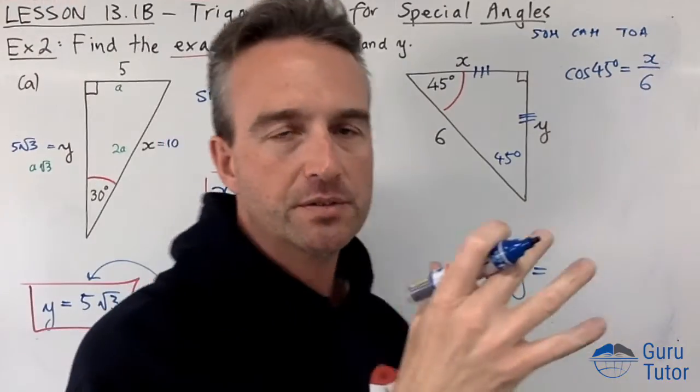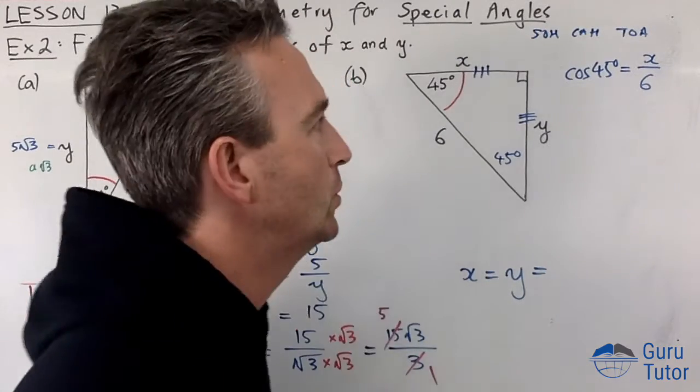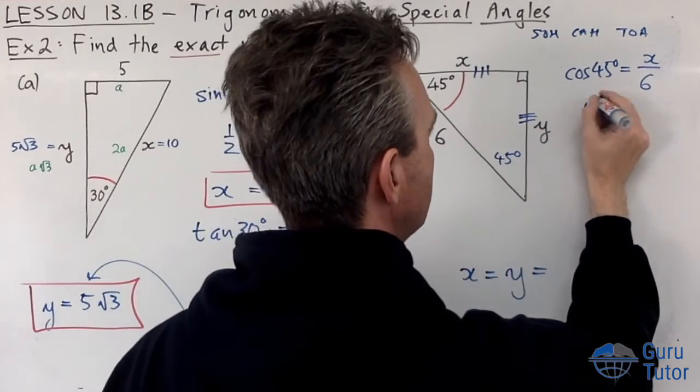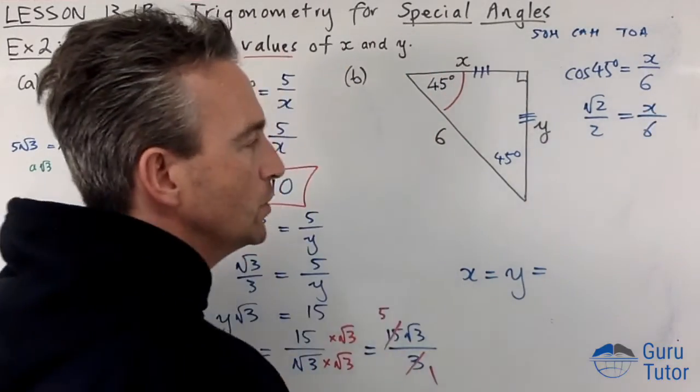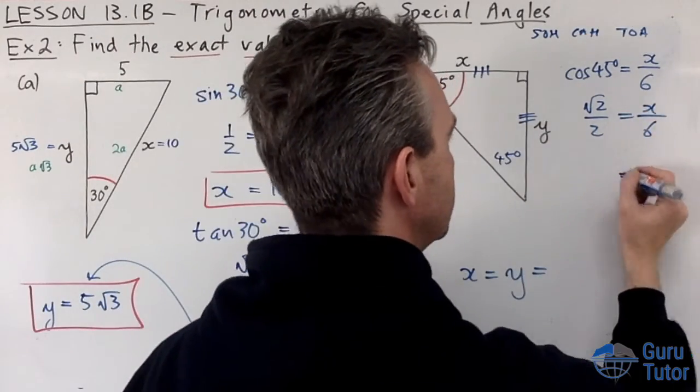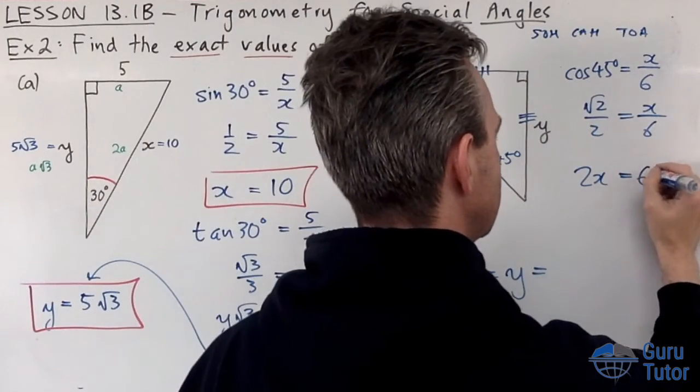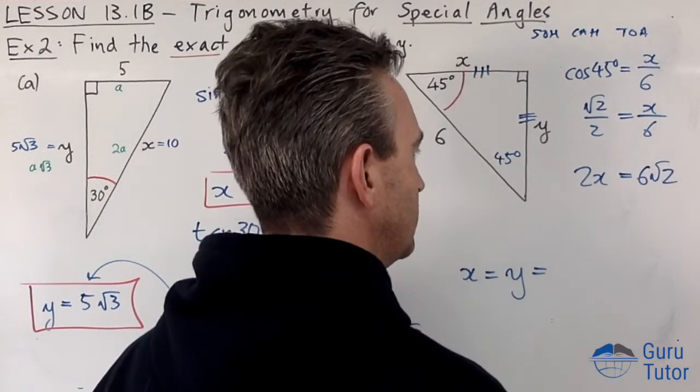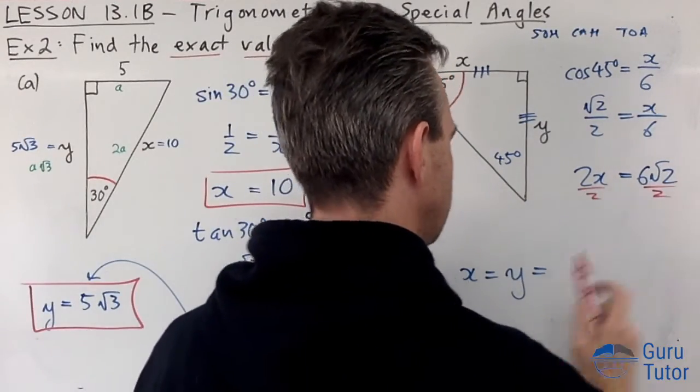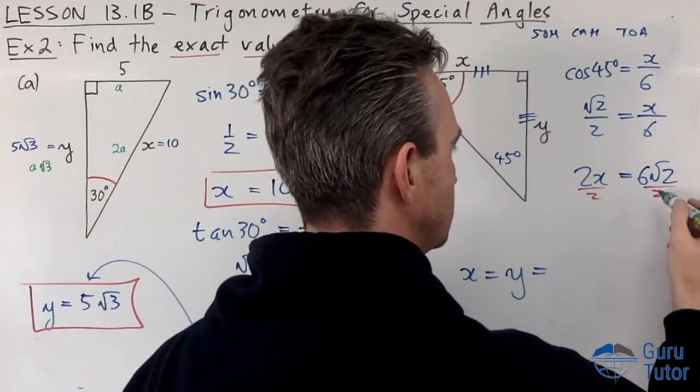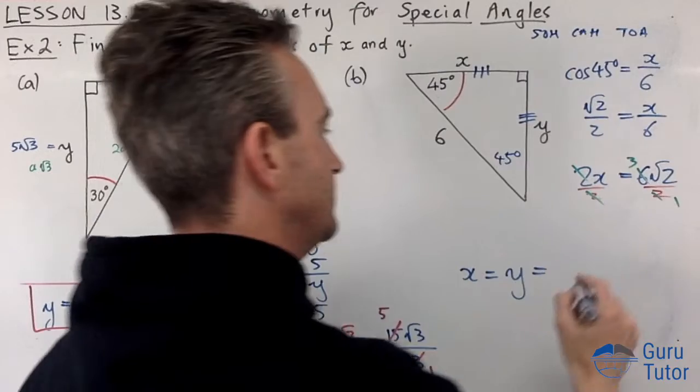So cos 45, cos is adjacent x over hypotenuse 6. Cos 45, what is cos 45? I'm imagining those triangles. Cos 45 is root 2 over 2, which is x over 6. Cross multiply and we get 2x equals 6 root 2. Divide both sides by 2, divide by 2, divide by 2, cancel and we're going to get 2 goes into 2 once, 3, 2's cancel, x equals 3 root 2.